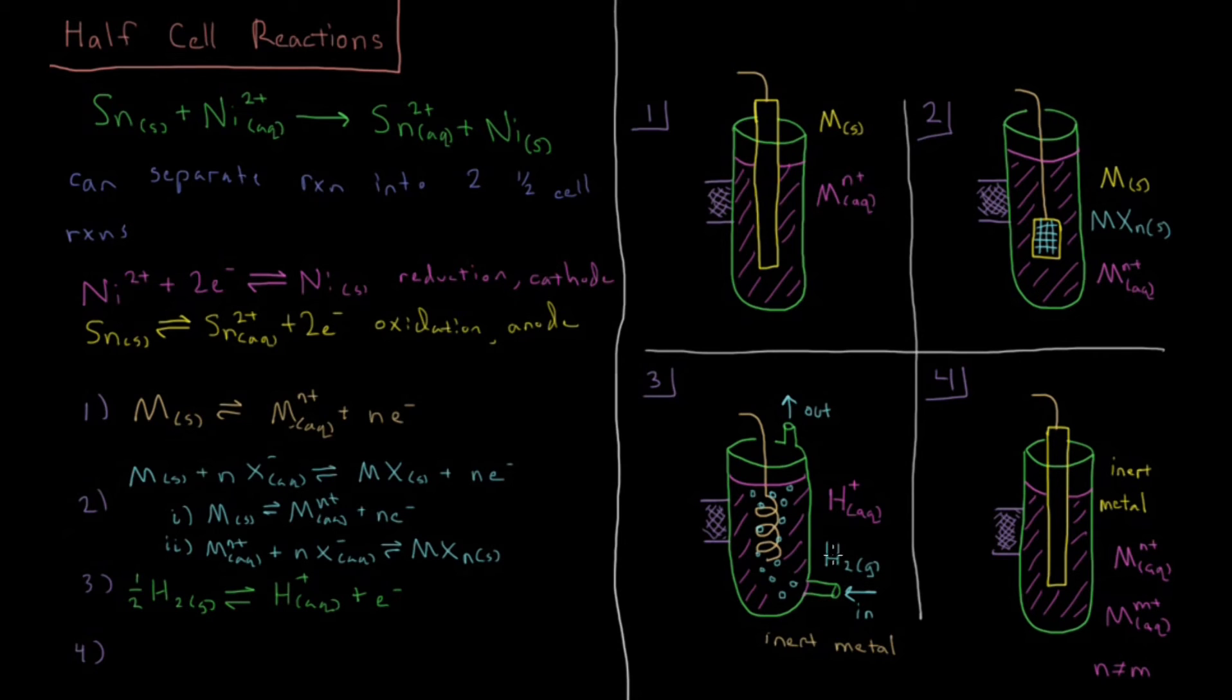So what you have here is you have the hydrogen gas which is being bubbled in through some inlet, bubbled through the solution over an inert metal electrode. So it's a metal which doesn't interact, it just allows electrons to flow back and forth.